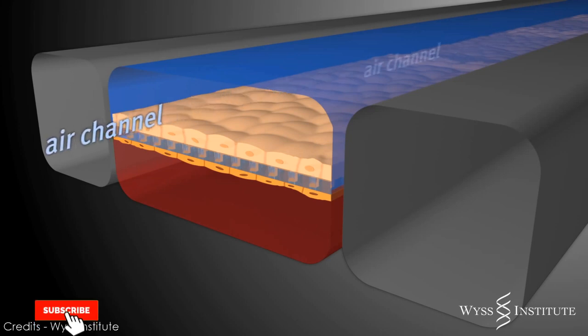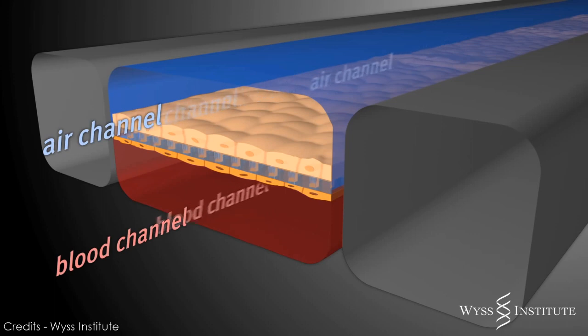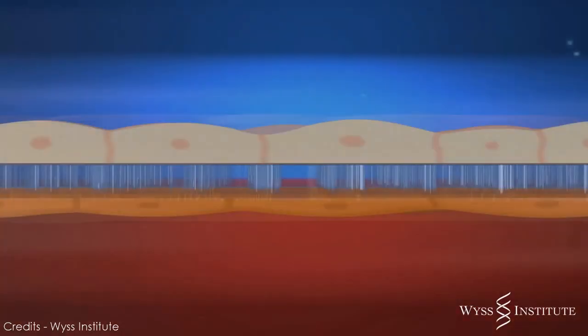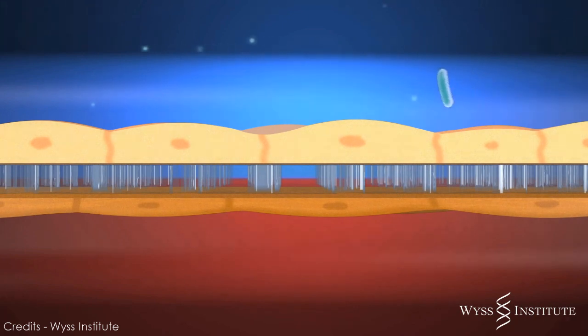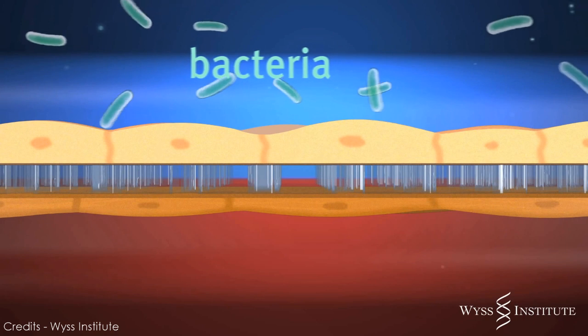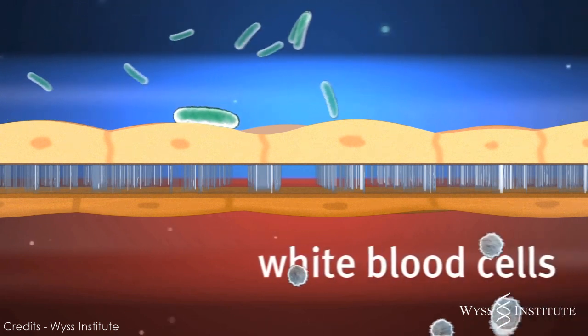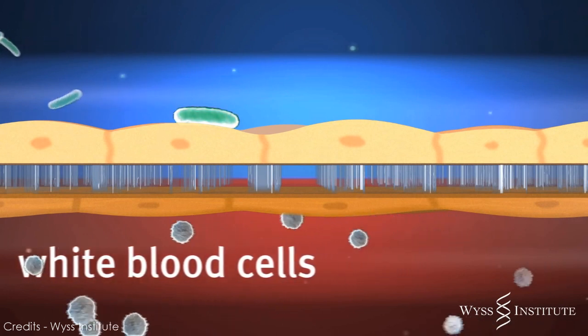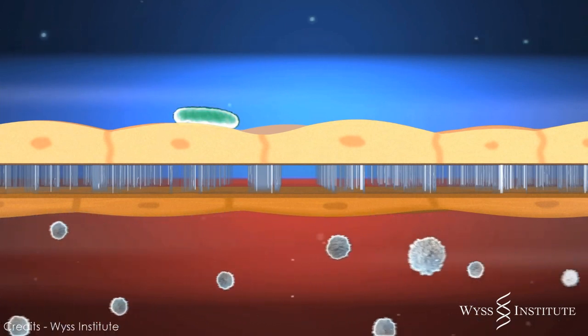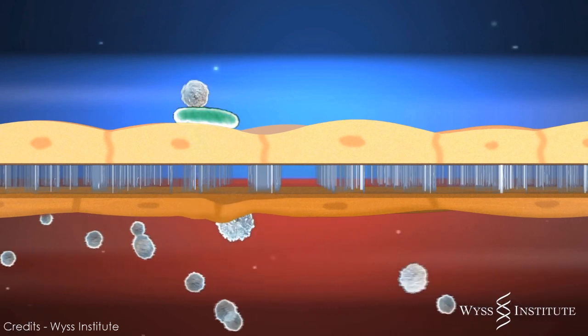Then air flows over the top of the lung cells and the liquid medium containing the human blood cells flows below the capillary cell layer. We can then introduce bacteria in the lung channel to mimic an infection and we introduce white blood cells through the blood channels. We see that the white blood cells migrate across the capillary cell layer through the membrane into the air space where they interact with bacteria.